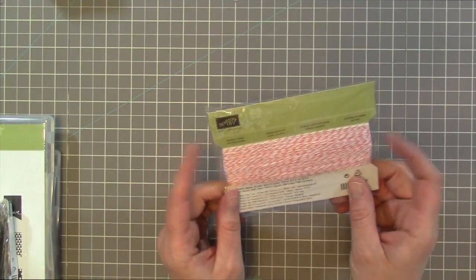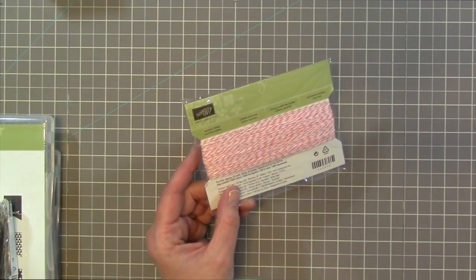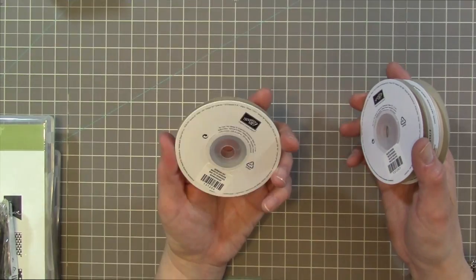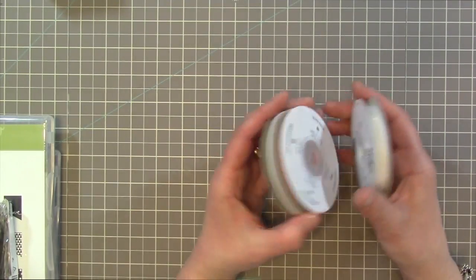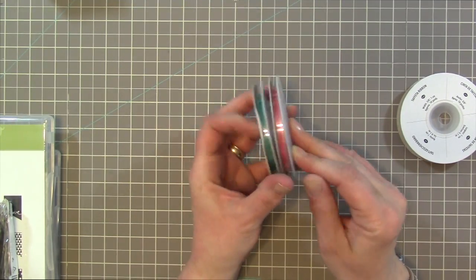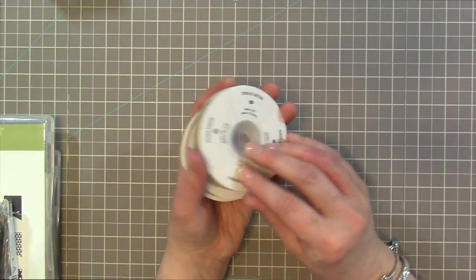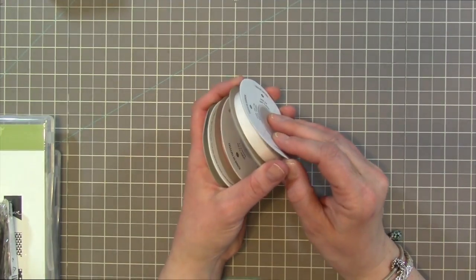And then for some ribbon and thread. I got the Calypso Coral Baker's Twine. And then I got three ribbons. I got Bermuda Bay and Melon Mambo in the 1 1/8th inch Taffeta ribbon. And this is the Taffeta white ribbon. And this is 3/8th of an inch. Because I don't really have any white ribbon.